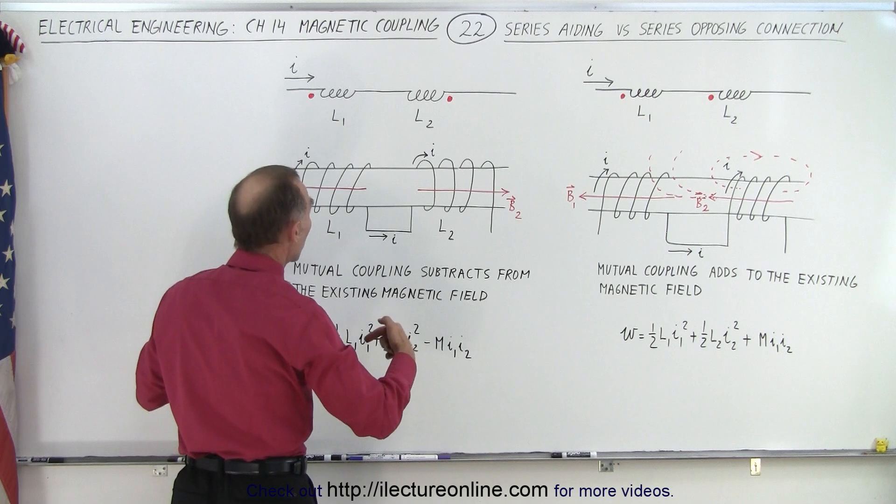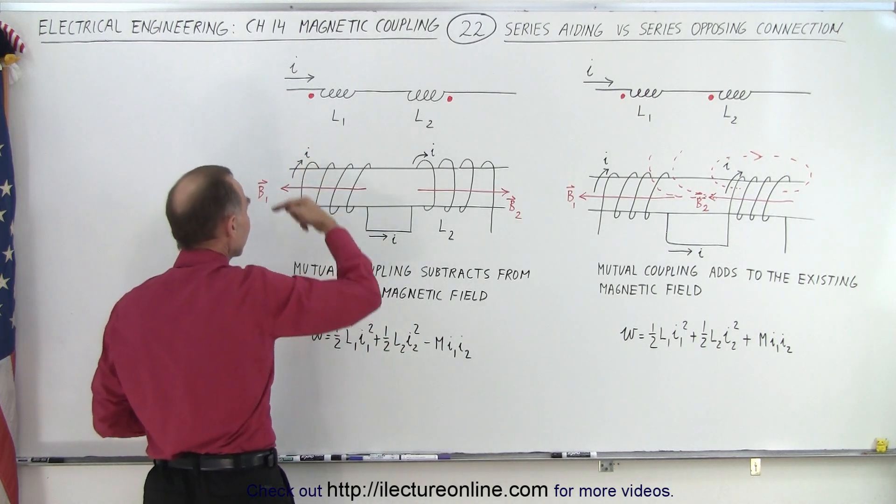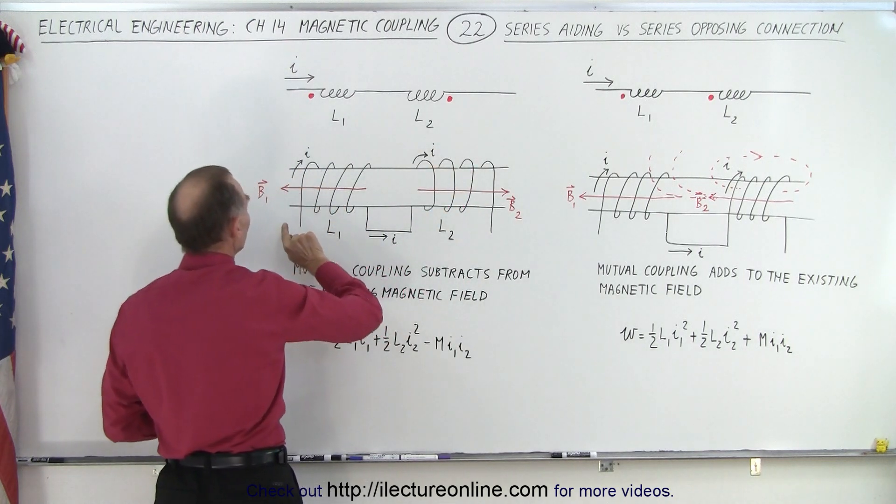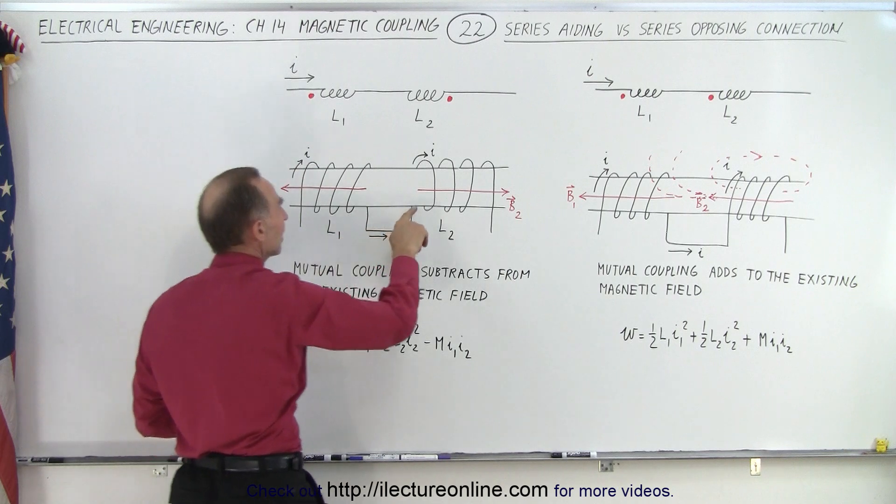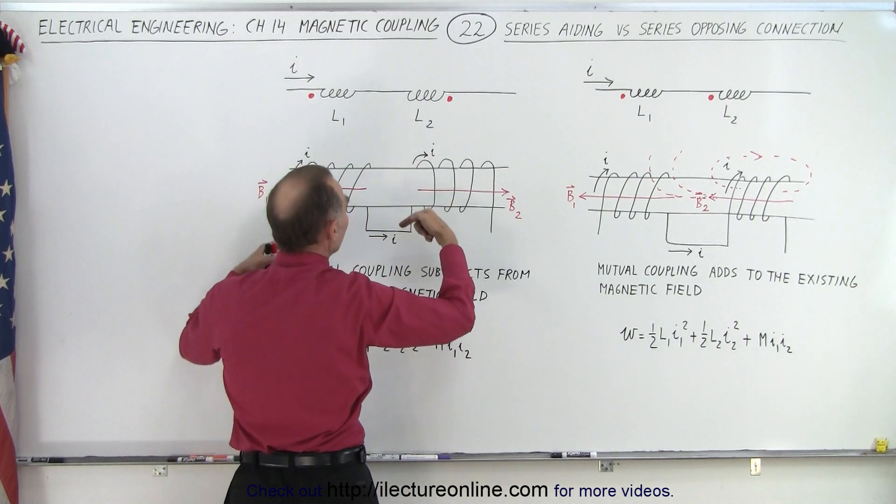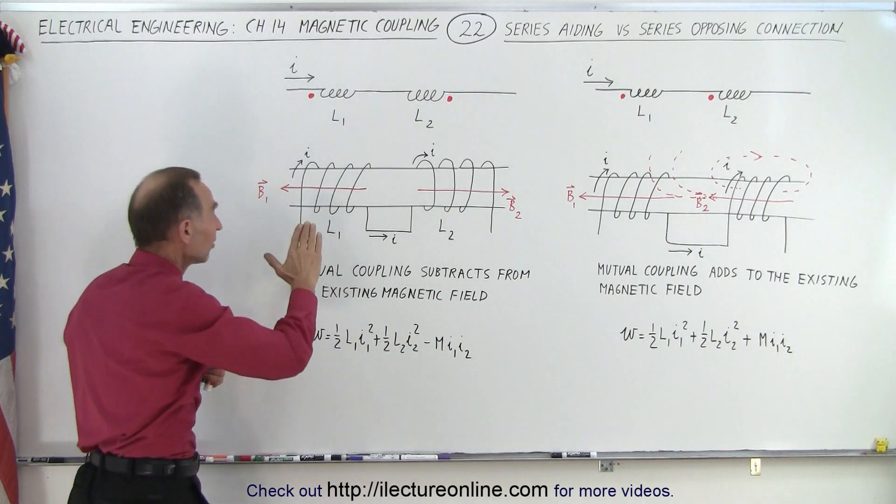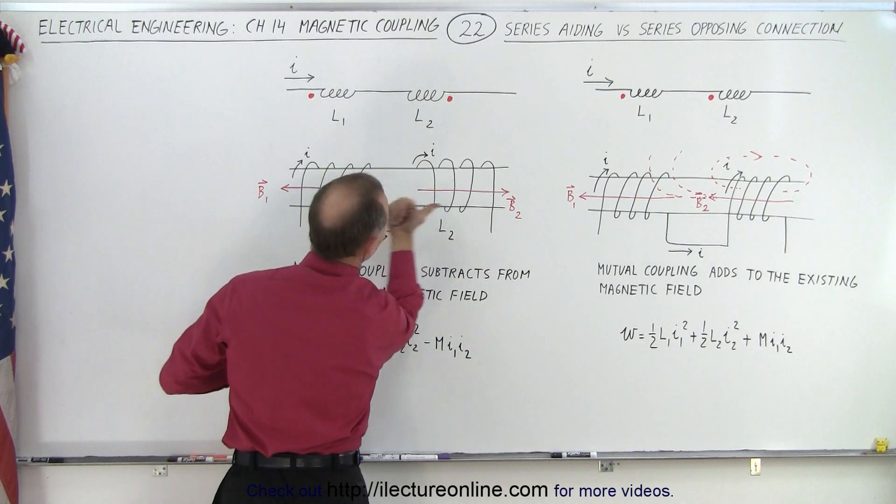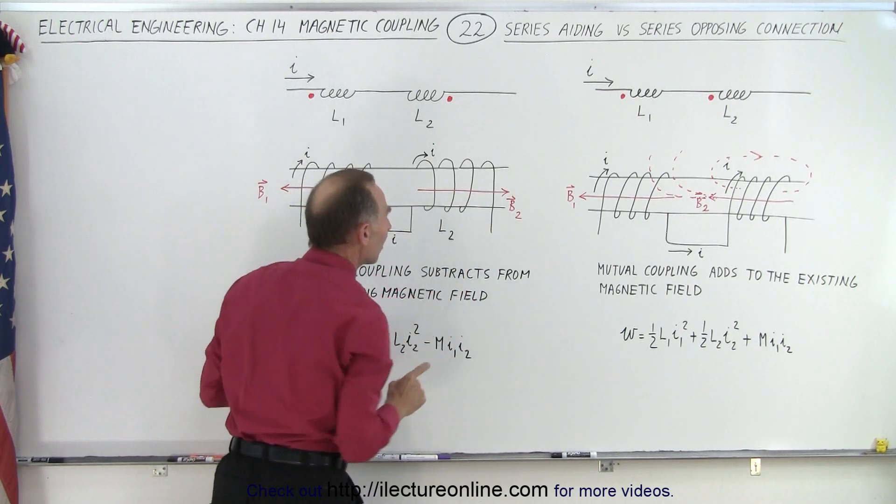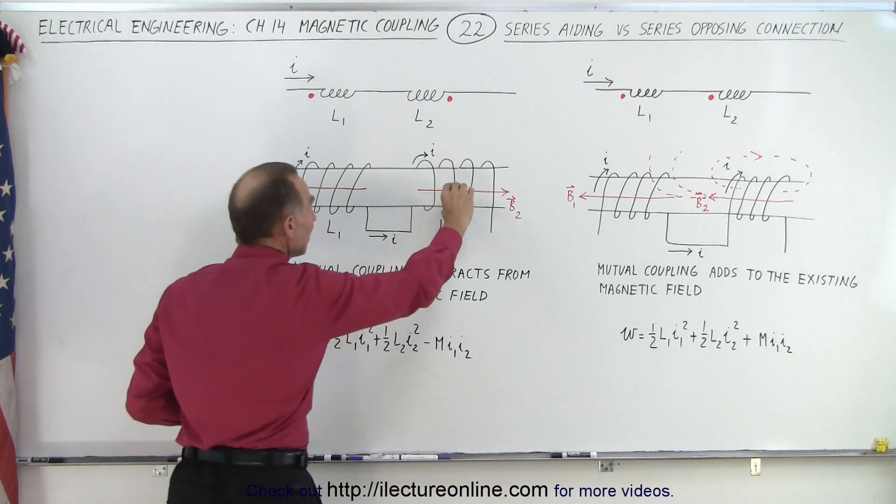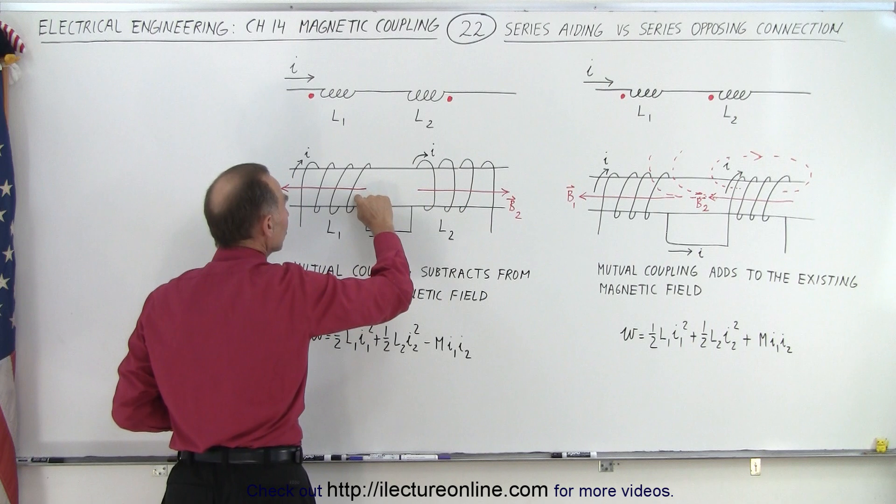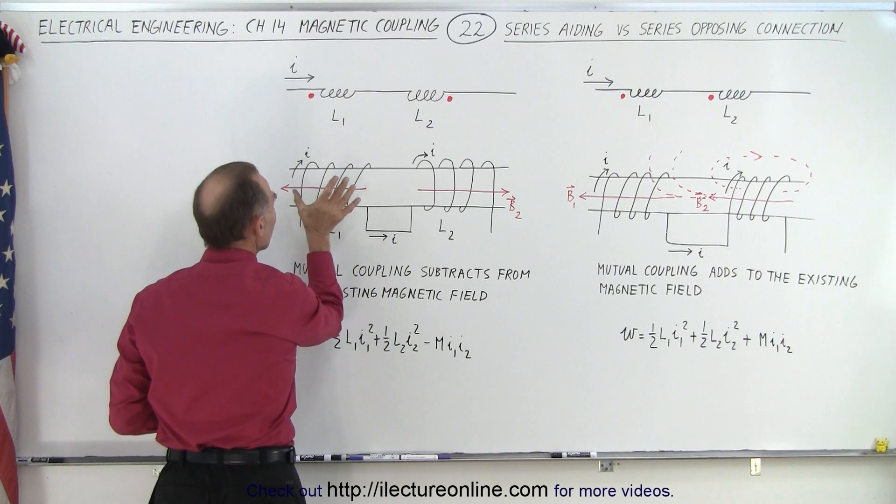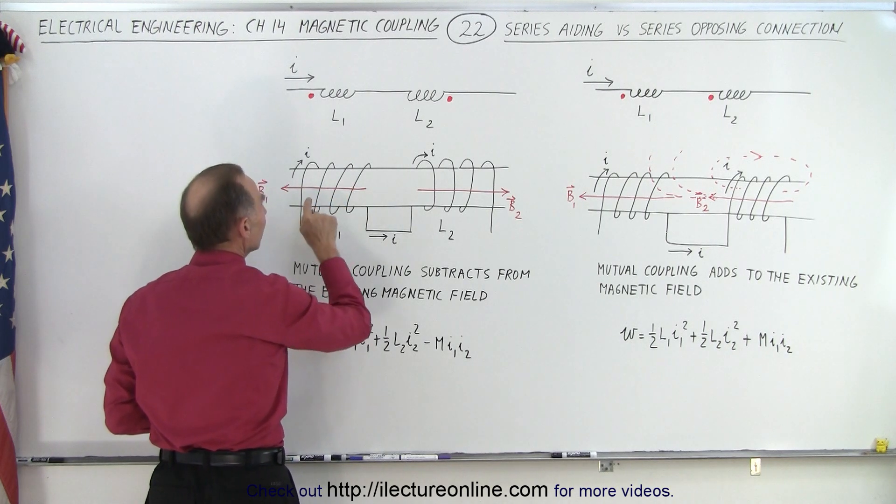But what happens when you have them wound differently? In this case, you have the coil winding around like this and then here you have the coil wound in the opposite direction so that the current will come up on the front side and down the back side. Here will come up on the back side and down on the front side. So notice then if you use your right hand rule on this side, the magnetic field will point to the left. But on this side, you have to turn your hand around and notice that now my thumb points to the right and notice that the magnetic field now points in the opposite direction. So any field of this coil that penetrates through this coil right here will now be in the opposite direction so it will actually diminish or reduce the magnitude of the magnetic field here and vice versa.